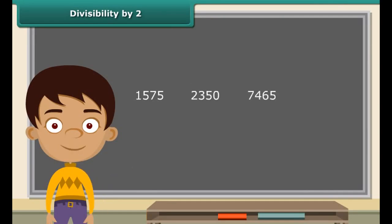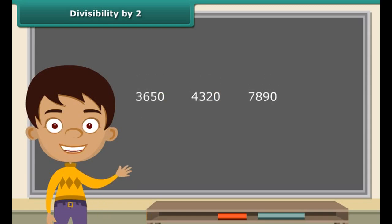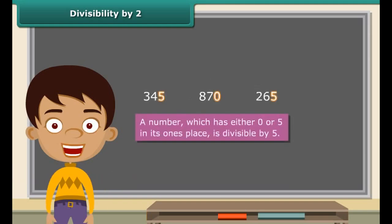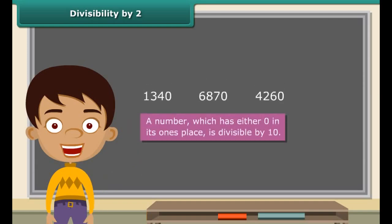Anuj finds it very easy to devise a rule for checking divisibility by 5. Any number that ends with a 0 or a 5 is a multiple of 5, and therefore it is divisible by 5. Any number that ends with a 0 is a multiple of 10, and therefore it is divisible by 10. So any number that contains 0 or 5 in its ones place is divisible by 5, and any number that contains 0 in its ones place is divisible by 10.